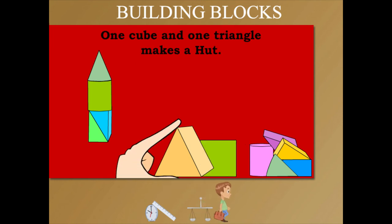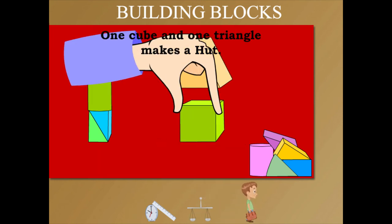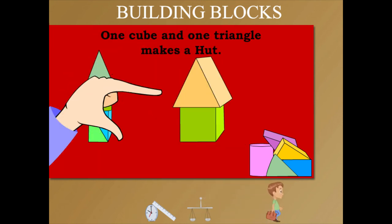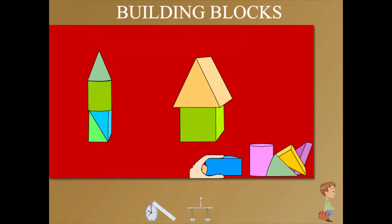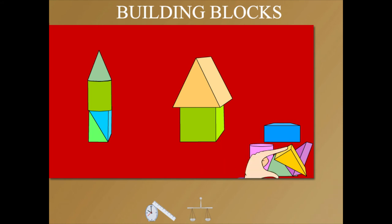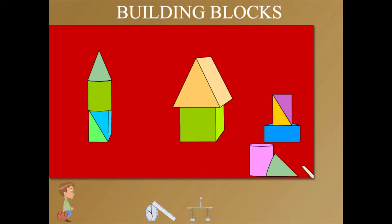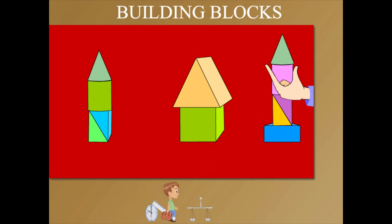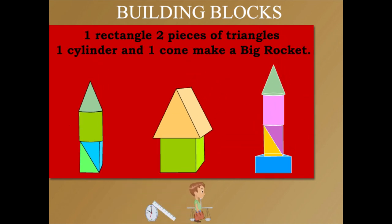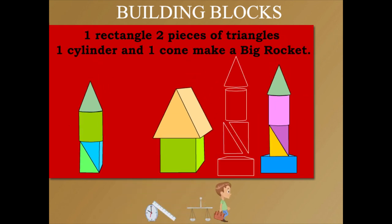One cube and a triangular block on top makes a hut. One rectangular block at the bottom, two triangular blocks, a cylindrical block and a cone at top make up a big rocket.